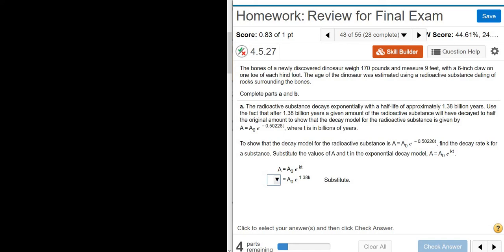Use the fact that after 1.38 billion years, a given amount of the substance will have decayed to half. Yep, and they give us this formula here. So I'm going to go ahead and write the formula down. So this is A equals A sub 0 E to the negative 0.50228 T. Yeah, so use the fact we'll have decayed to half to show that the decay model, right? This is the decay model.